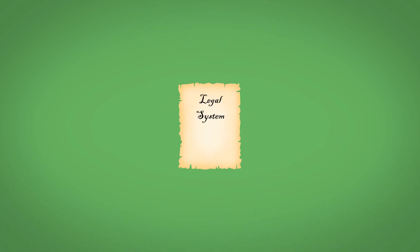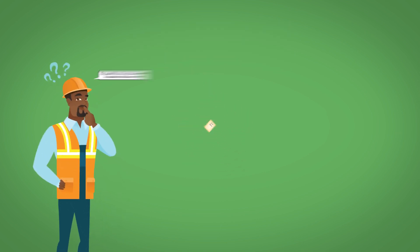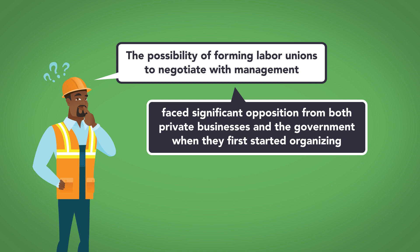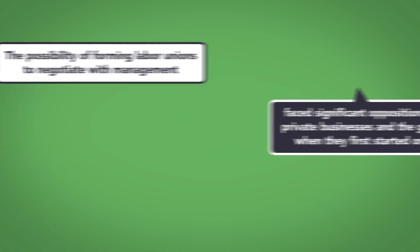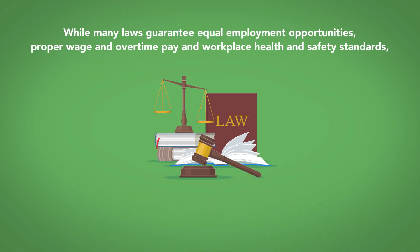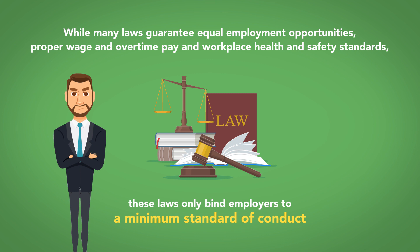Legal systems in place in the late 1800s did little to regulate labor and workplace conditions. The possibility of forming labor unions to negotiate with management faced significant opposition from both private businesses and the government when they first started organizing. But decades of persistence led to the development of federal protections of the rights of employees to unionize and collectively bargain with employers. While many laws guarantee equal employment opportunities, proper wage and overtime pay, and workplace health and safety standards, these laws only bind employers to a minimum standard of conduct.